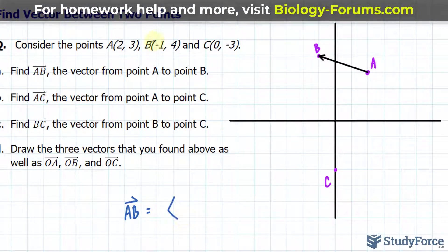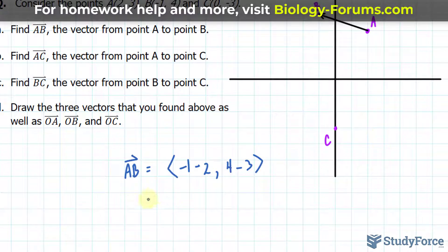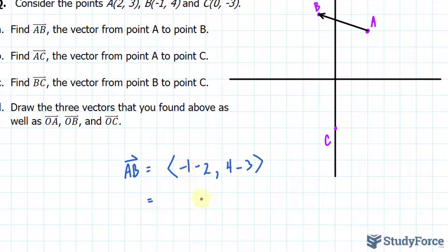For the x-coordinate, we'll say -1 minus 2. And for the y-component, 4 minus 3. Negative 1 minus 2 is -3, and 4 minus 3 is 1. So the components of the vector that spans A to B is <-3, 1>.